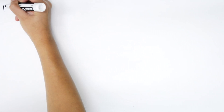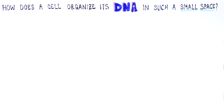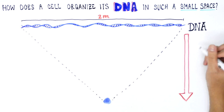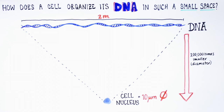How does the cell manage to organize its DNA within the tiny nucleus? In a recent study, we show that when the two-meter-long DNA is packaged in the microscopic nucleus, the cell avoids entanglements and knots by transiently cutting and re-ligating the DNA.